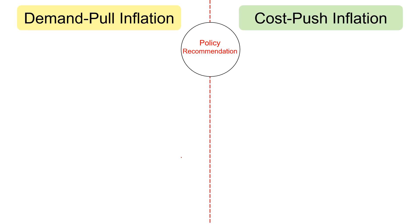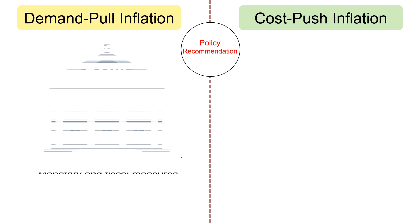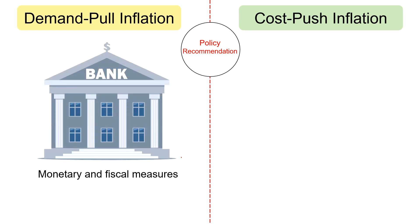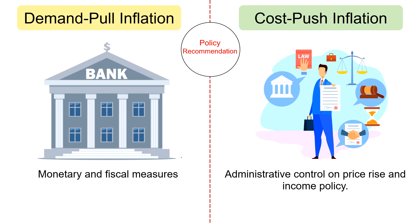Last but not the least, policy recommendations. In case of demand-pull inflation, monetary and fiscal measures are implemented by the government, which includes change in interest rates, open market operations, taxation, reserve requirements, etc. In contrast, in case of cost-push inflation, administrative control on price rise and income policy through minimum wage laws, progressive taxation, social welfare programs, income redistribution, etc. are some of the measures that the government implements.